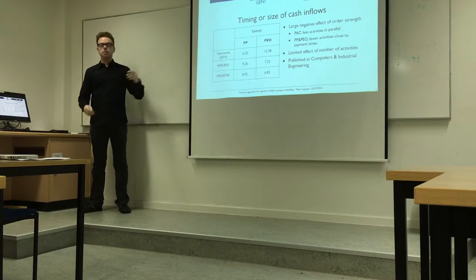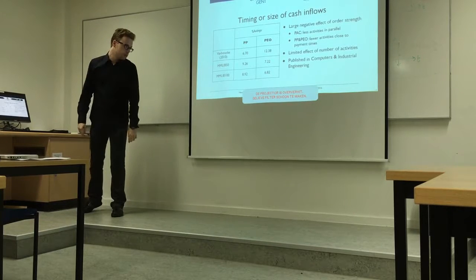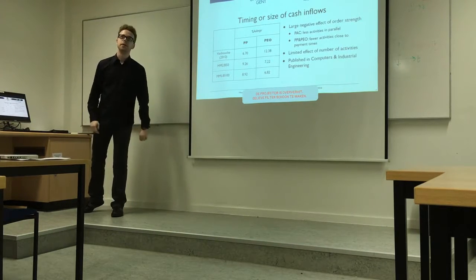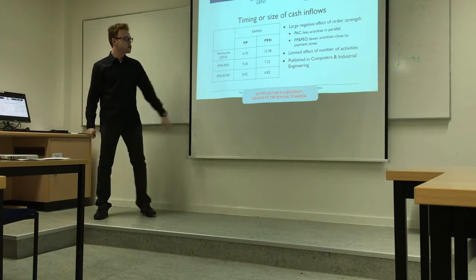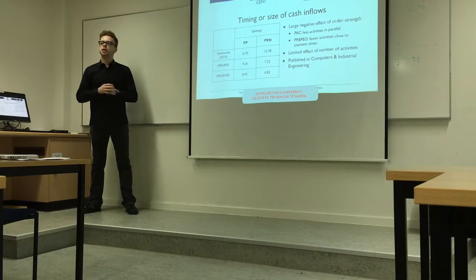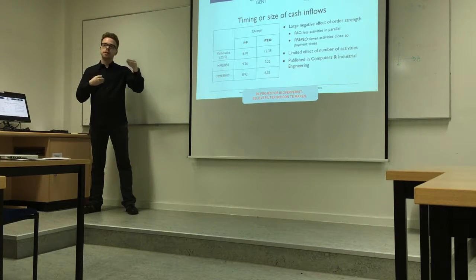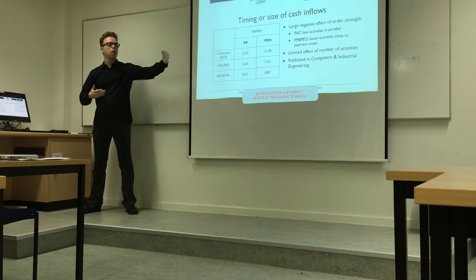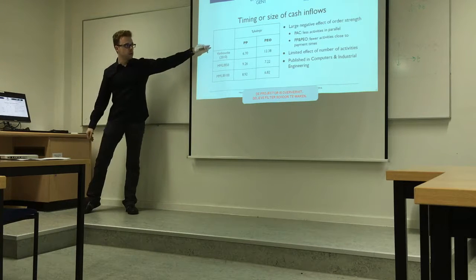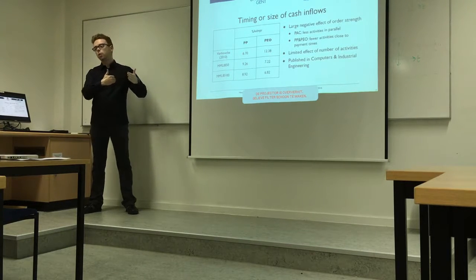This negative effect of order strength occurs because higher order strength means fewer activities can be scheduled in parallel. Instead of scheduling each activity around its own preferred finish time, you schedule them more serially, so some cash inflows are received later and cash outflows you'd prefer to delay must be paid earlier. In this chapter's payment models, the analogous effect is whether an activity is scheduled closer to or further away from a payment time.